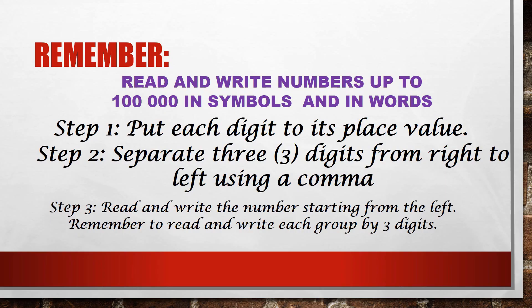Superb! Take note that to read and write numbers up to 100,000 in symbols and in words, you need to follow certain steps. Step 1: Put each digit to its place value. Step 2: Separate three digits from right to left using a comma. Step 3: Write the number starting from the left. Remember to read and write each group by three digits.